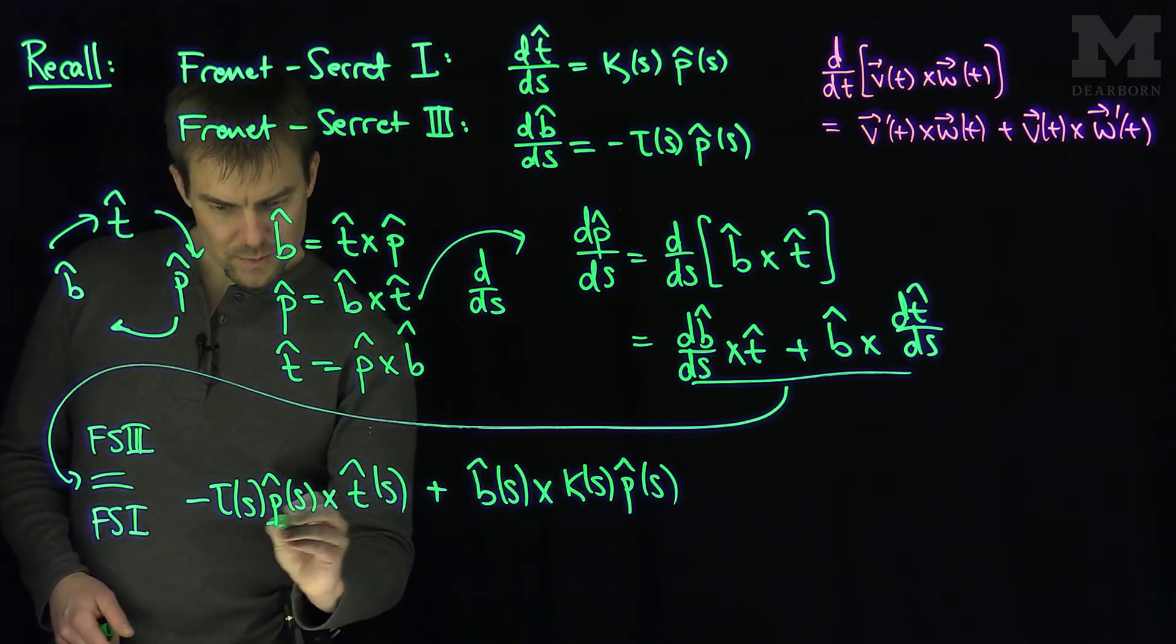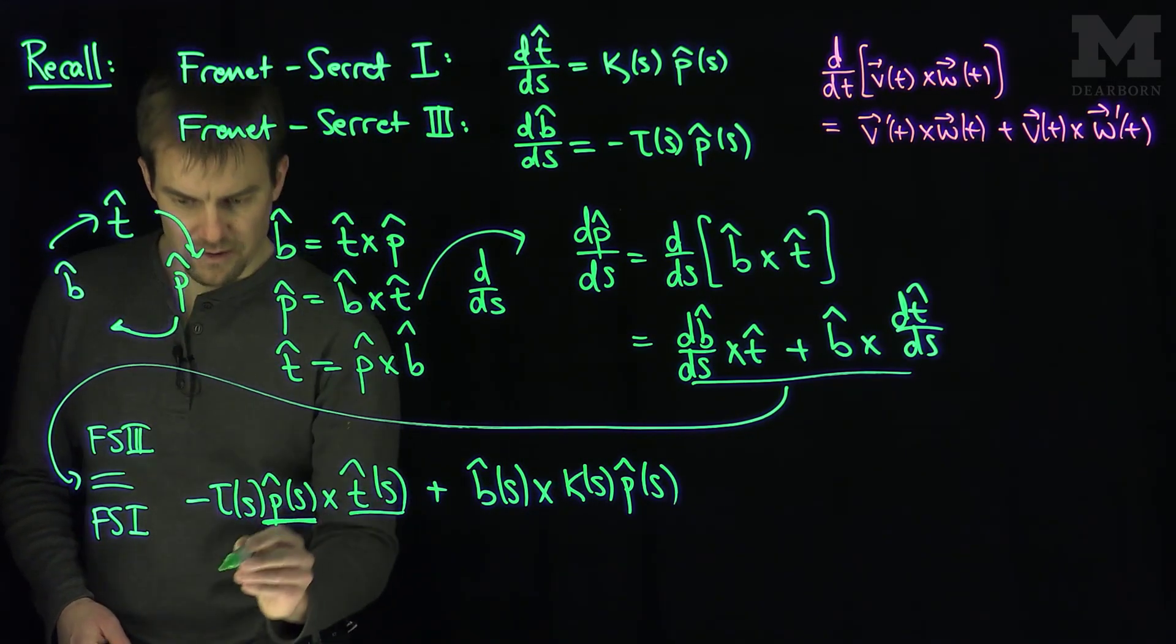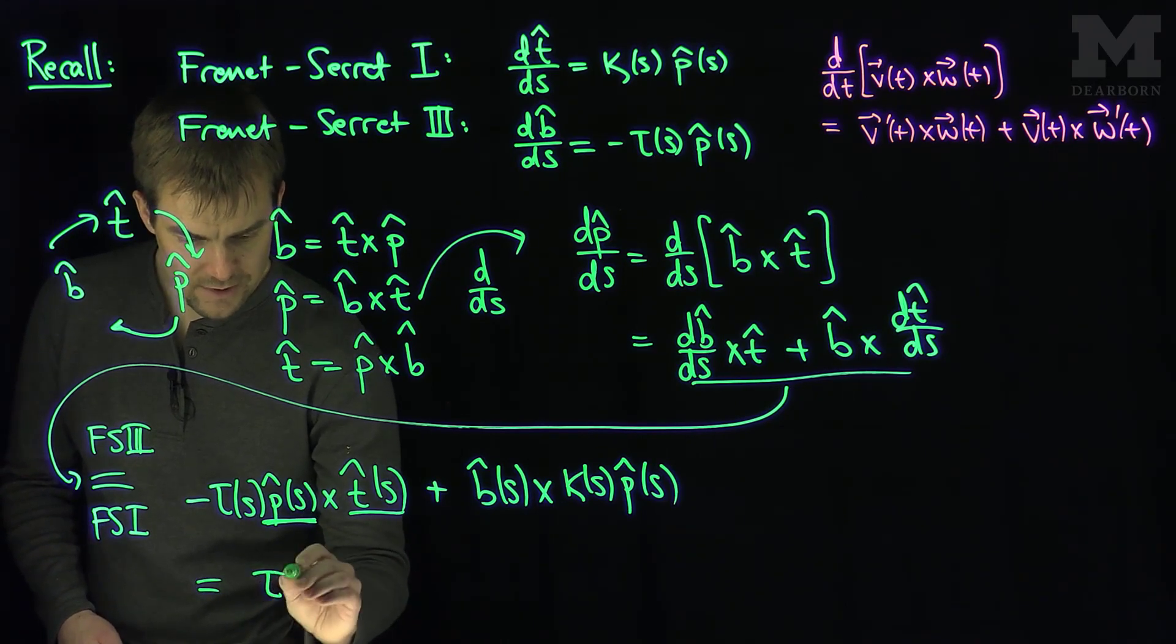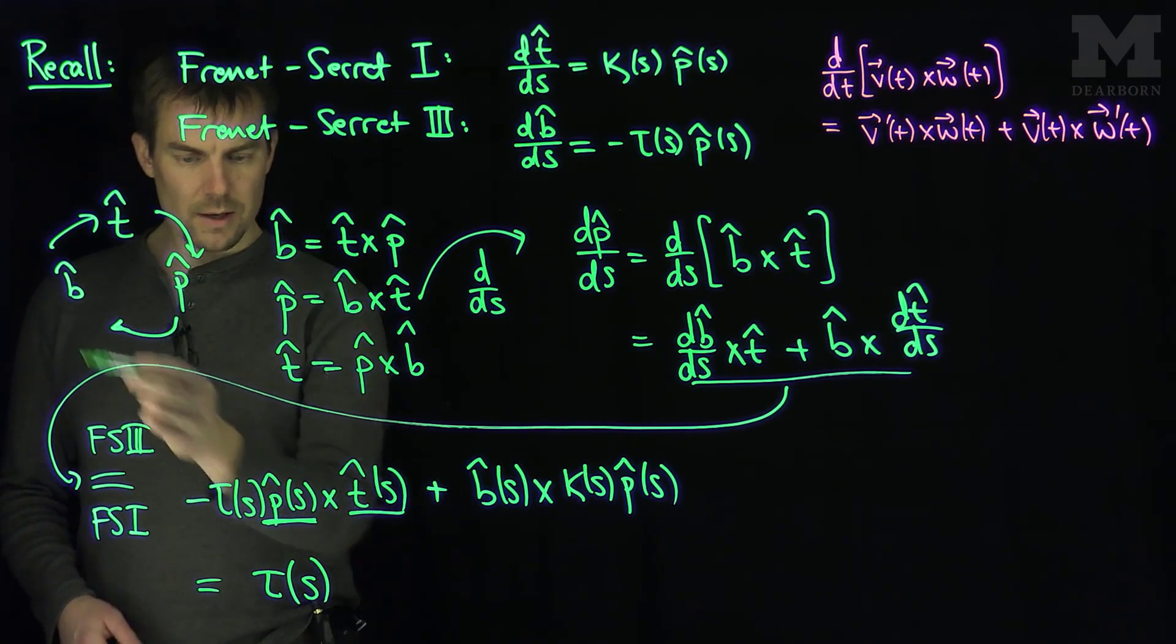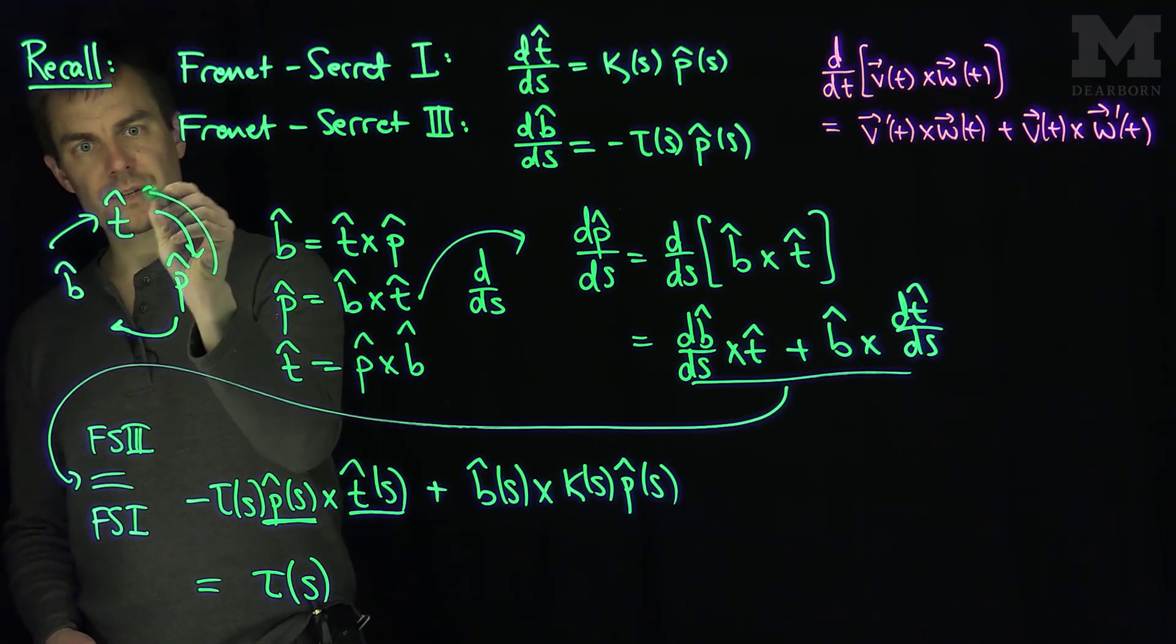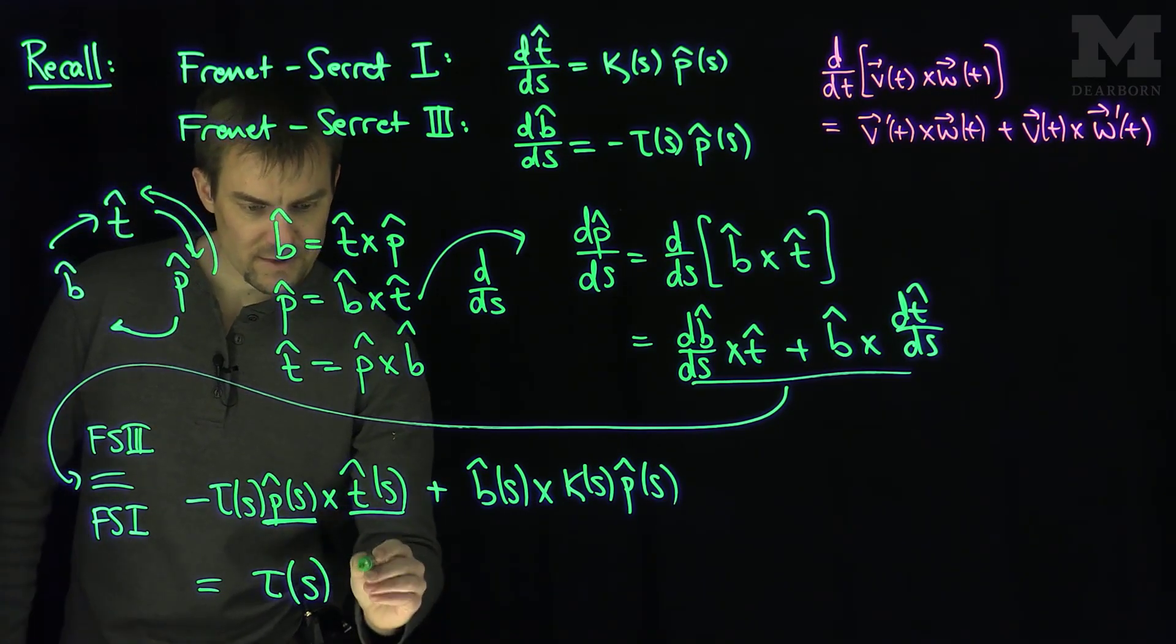Now, let's do this carefully. So what's p cross t? p cross t is negative b. So this is going to be positive torsion of s in the direction t cross p. So we go along the triangle, p cross t is going to be negative b, so that's going to turn into a positive.